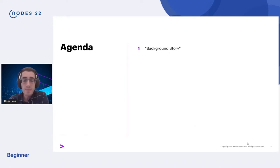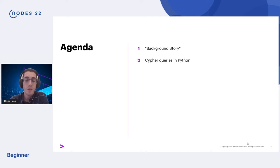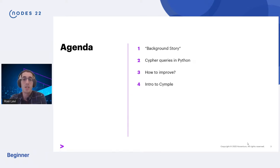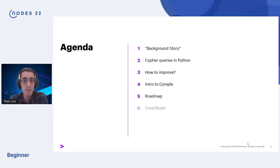Let's quickly go over the agenda. We'll start with a very short background story to have some context. Then I'll show how Cypher queries are typically written in Python, and once we look at that we'll ask how we can improve. To this end I will show the main topic of this session — Simple — the Python package for writing Cypher queries. Then I'll quickly go over the future roadmap and invite you all to contribute.